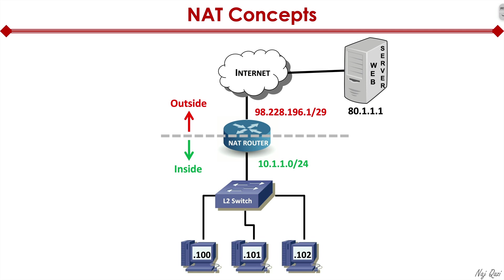The LAN side from a NAT perspective is called the inside of our network, while the outside interface facing the internet is considered outside. The first NAT term to know is inside local address. As the name suggests, it's inside our network and local to us, meaning the 10.1.1.0/24 range cannot be routed on the internet. RFC 1918 IP address space is blocked by ISPs globally, so that traffic will die at the edge of our internet boundary.